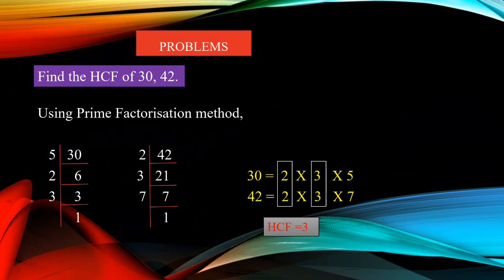Now write the factors. For 30: 2 × 3 × 5 (written in ascending order). For 42: 2 × 3 × 7. Then, circle the common factors. 2 is common and 3 is common — these 2 are the common factors. Which is the highest one? 3 is the highest number. So, HCF equals 3.